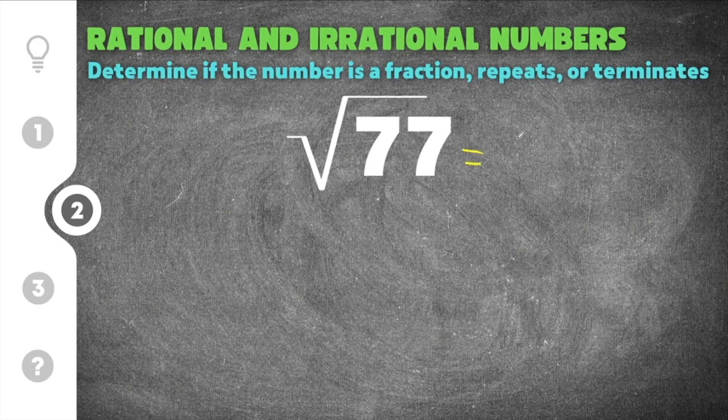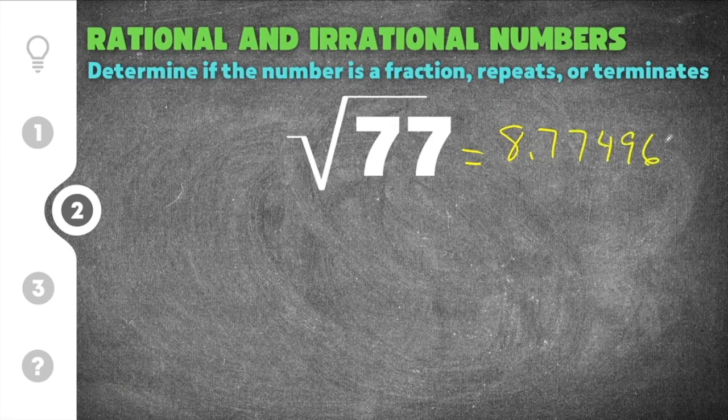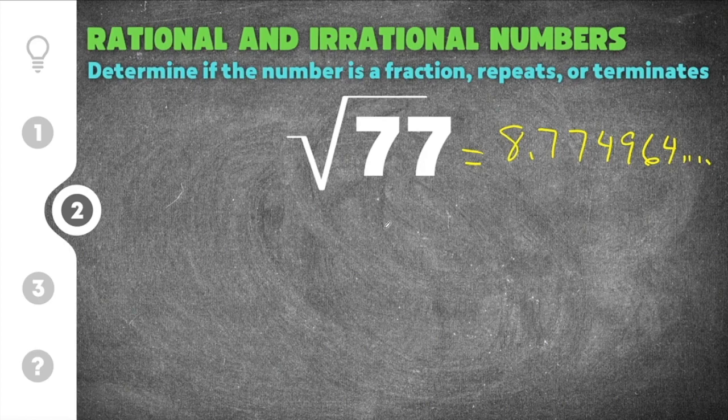this as a decimal will be 8.774964 and it goes on forever and it never repeats. It just stays a random string of numbers and never repeats and never stops. And because of that, that makes the square root of 77 an irrational number.